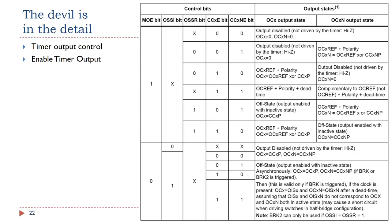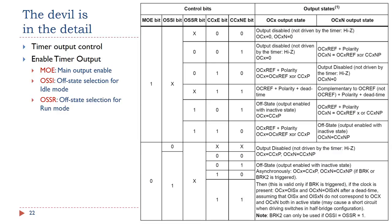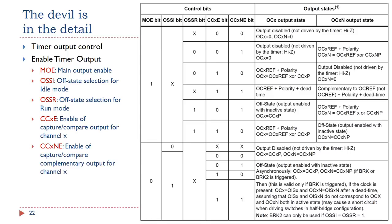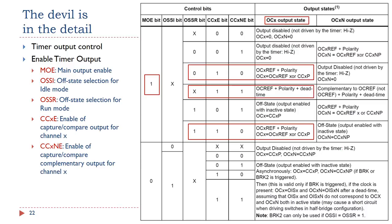The output of a timer is enabled by a combination of control bits: MOE (Main Output Enable), OSSI (Off-State Selection for Idle Mode), OSSR (Off-State Selection for Run Mode), CCXE (Enable of Capture/Compare Output for Channel X), and CCX NE (Enable of Capture/Compare Complementary Output for Channel X). These control bits are located in the timer registers CCER and BDTR. For example, in order to enable the output OC for Channel X, we need to set the MOE bit to 1 in register BDTR. Based on the needs of the software application, we can choose one of three configurations.